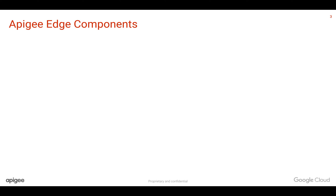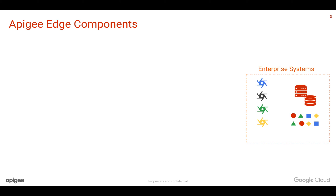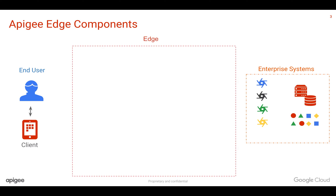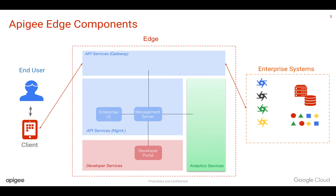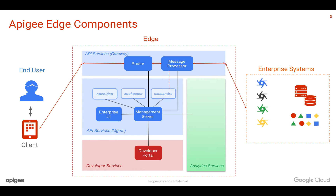Let's look at the different Apigee Edge components in detail. Apigee Edge sits in between the client and the target system. It is divided into gateway and API services, developer services, and analytics services. The client makes a call to the API gateway, which goes to the backend. The management server is the heart of Apigee Edge where all the functionality is implemented. The gateway itself is divided into a router and a message processor — the router distributes traffic to the message processor where your API proxies get executed.